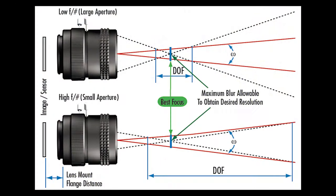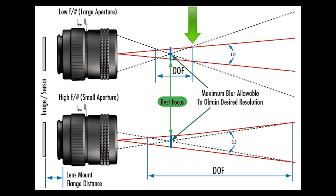I want to briefly talk about depth of field — some people call it depth of focus. It's really the amount of area in the scene that is in focus, and it's a really important concept whenever you're photographing moving objects, whether it be sports photography, wildlife, or landscape photography. With focus, we have a primary fixation point on the subject, but we also have a near point — the closest point in front of the subject that's still in focus — and a far point behind the subject that's still in focus.